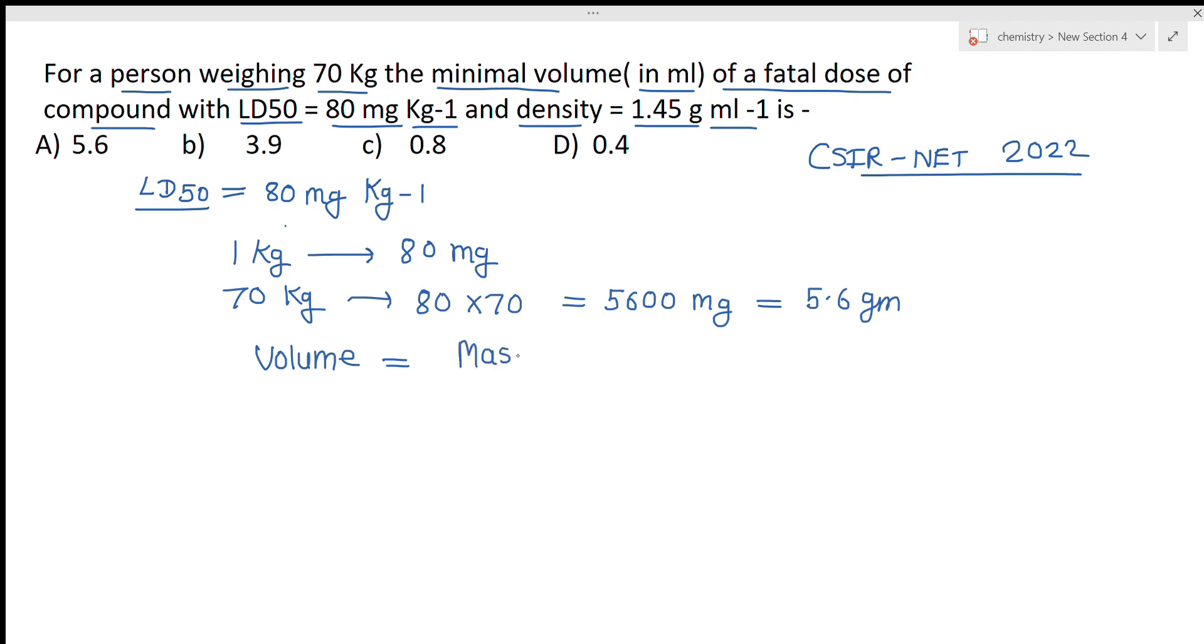Volume we have to find out and we have given density, we know the mass. So what is the formula? Mass upon density. Volume is this basic formula. So just you have to put here in this formula your amount 5.6 divided by 1.45 grams per ml. This is in grams per ml and this is in grams. So your answer that you are getting is approximately 3.9 ml.